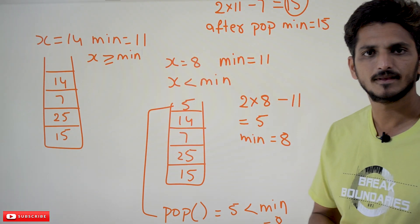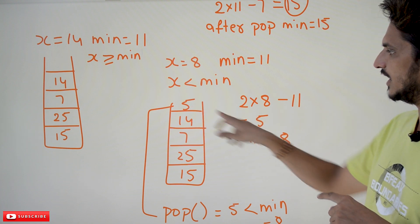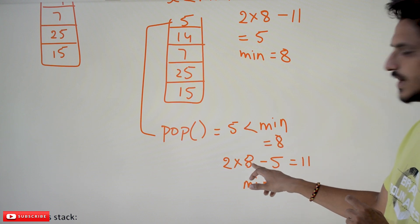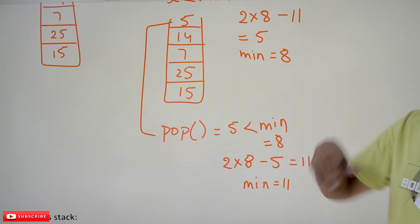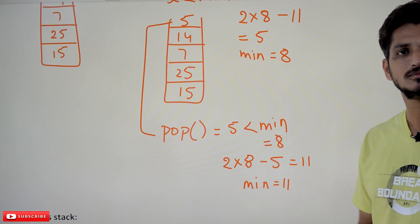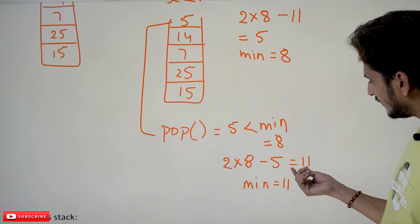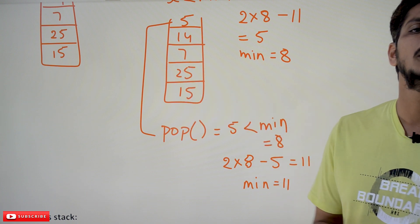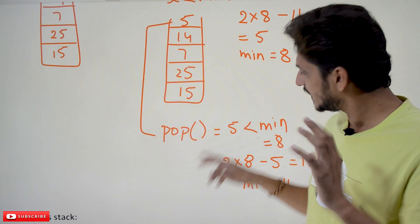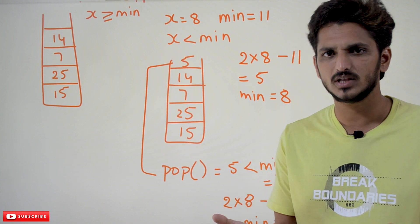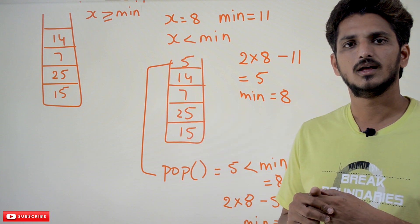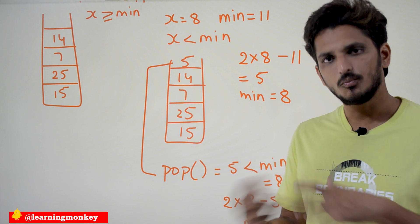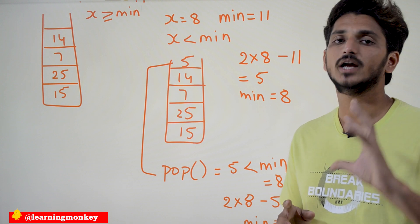If you want to pop 5: the minimum element is 8, and 5 is less than 8. So compute 2 × min − popped = 2 × 8 − 5 = 11. You recover the previous minimum element 11. Min becomes 11 after popping. That is how we keep track of the previous minimum element. Get min operation is very simple — just display the min element. Push has two conditions: if element is less than min, use the formula; otherwise push directly. Pop also checks if the popped value is less than min.